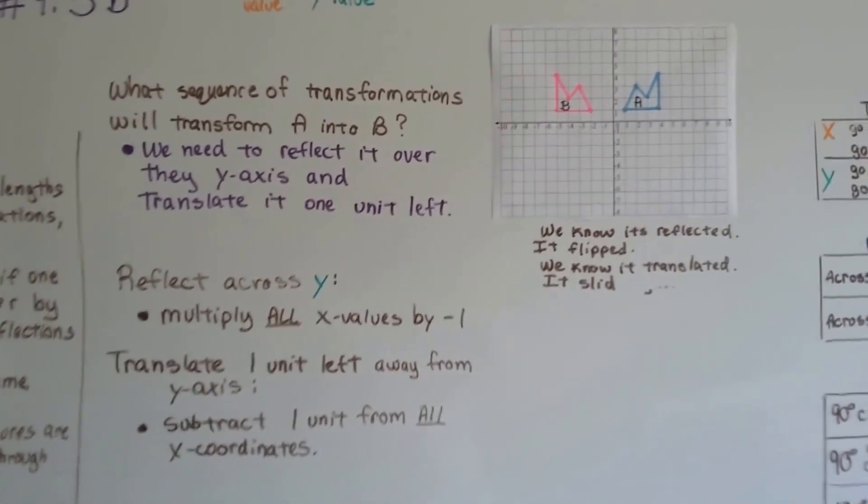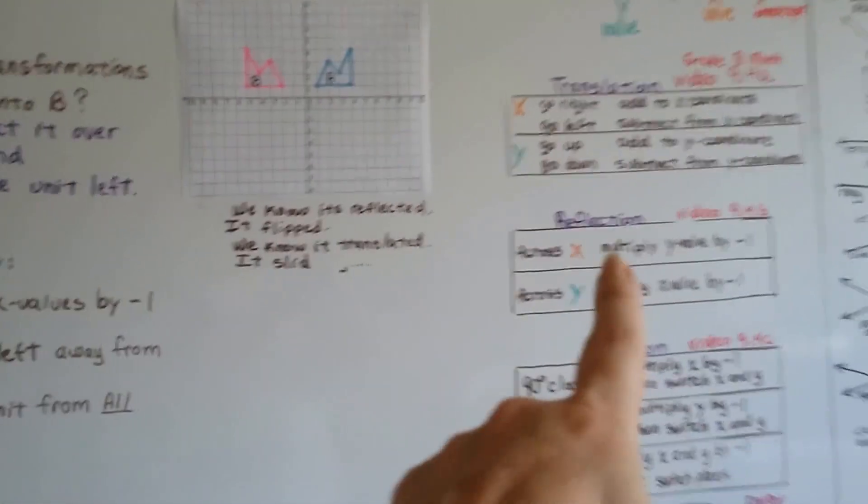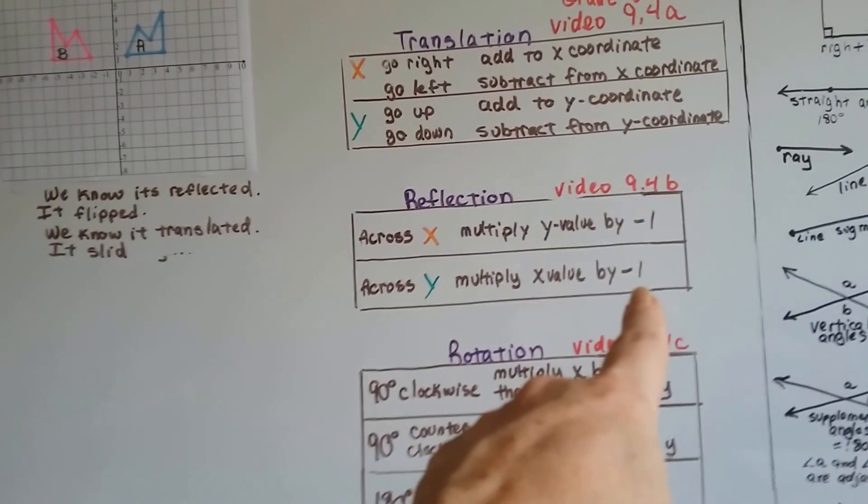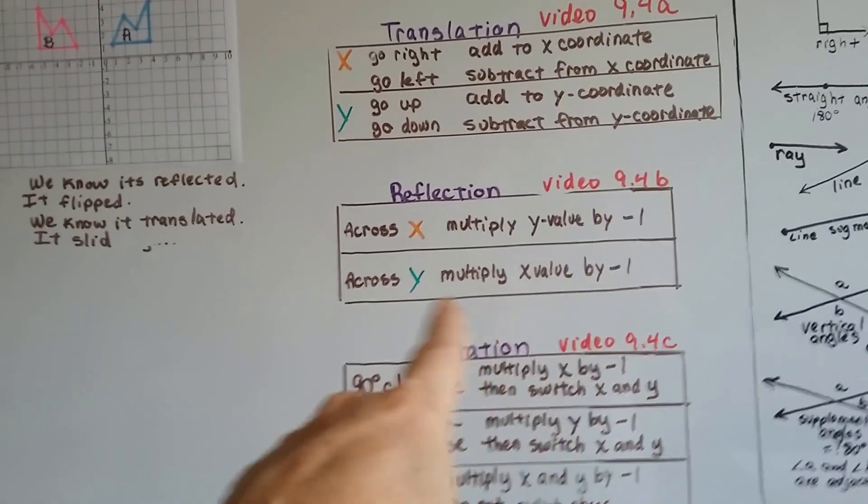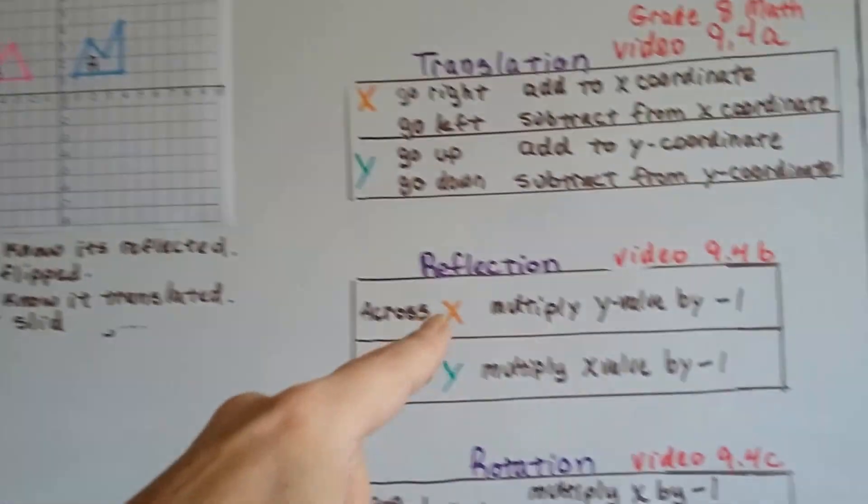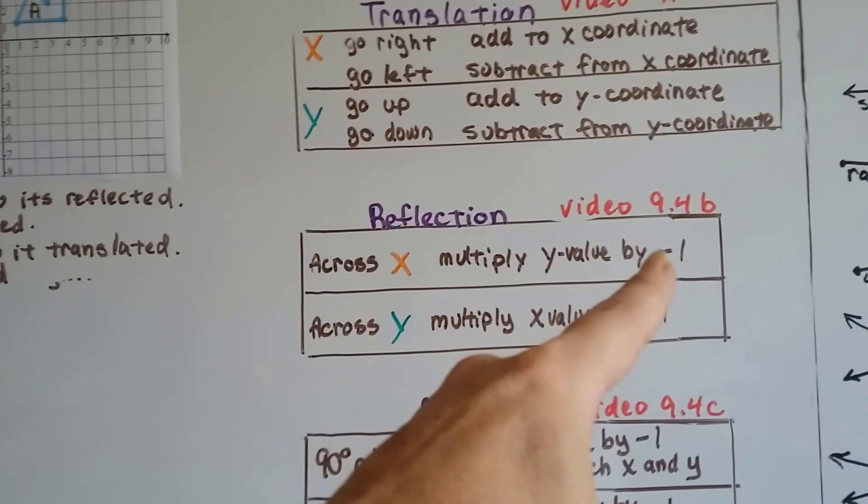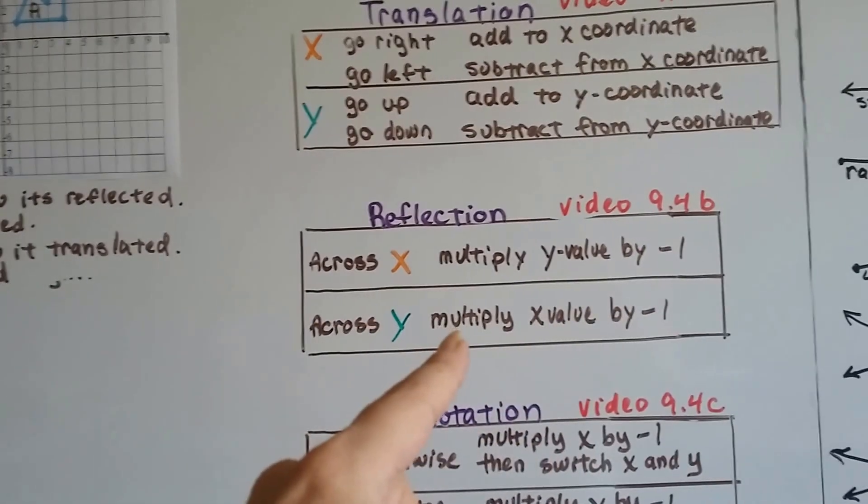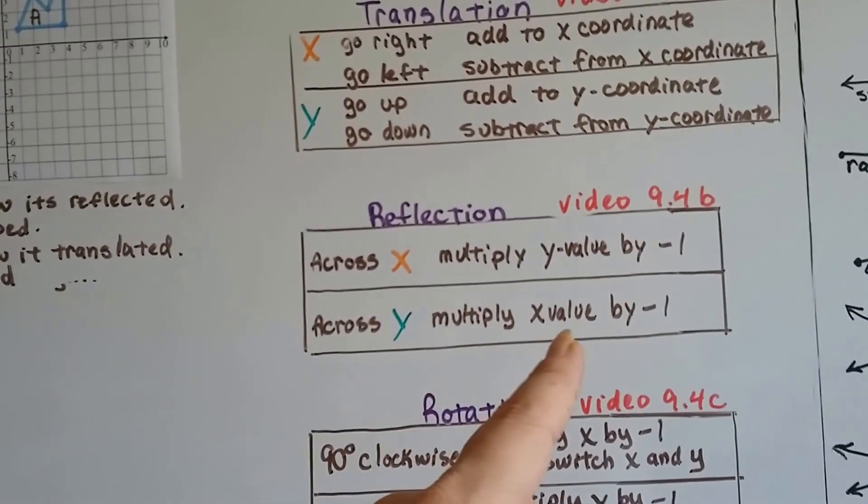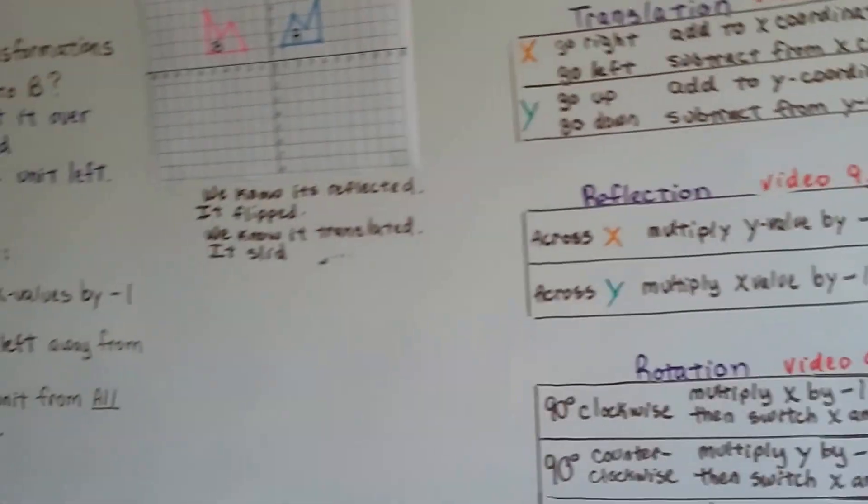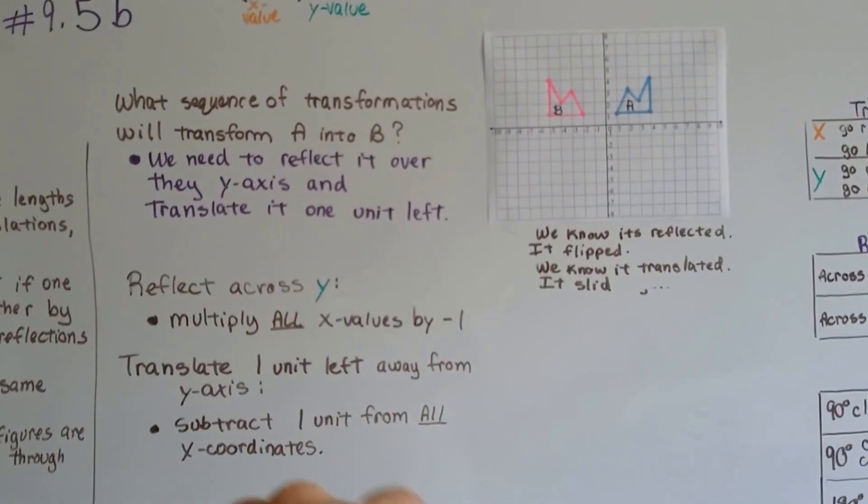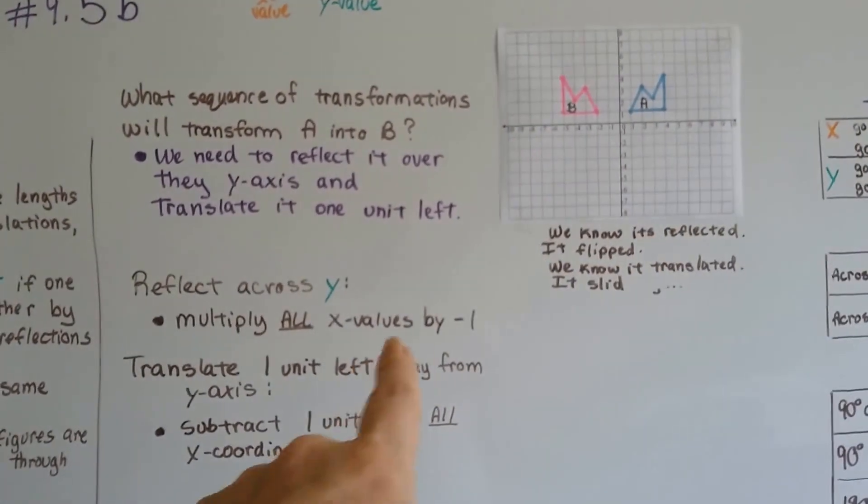So, we reflect across y, and the rules for reflection to go across y is we multiply the x values by negative 1. Remember how the reflections are opposites? If we want to go across x, this line, then we'd multiply the y values by negative 1. But to go across y, we do the opposite. To go across x, we do y. To go across y, we do x by negative 1.